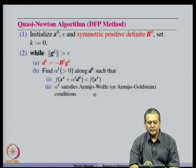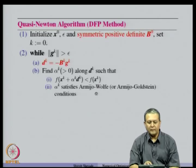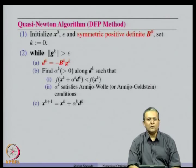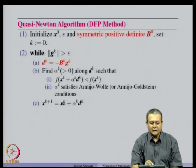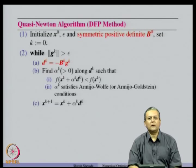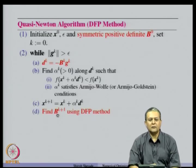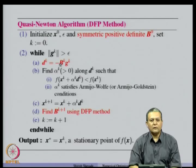Then we do the line search so that the Armijo-Goldstein or Armijo-Wolfe conditions are satisfied. We then get x_{k+1} using the standard update formula. Now is the time to find B_{k+1} using B_k, x_k, x_{k+1}, g_k, and g_{k+1}. If we have all this information, we can use the DFP method to update B_k to B_{k+1}. We then increment the iteration counter, and if the gradient norm at the new point is less than or equal to ε, we stop; otherwise we continue till the stopping condition is satisfied.